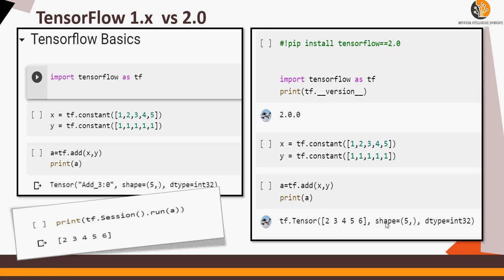In TensorFlow 2.0 there is no session. As soon as you say add and print, you would have this printed, and then shape 5 and data type int32—you will directly get the output. So I guess you got a little bit of a primer on TensorFlow 2.0.